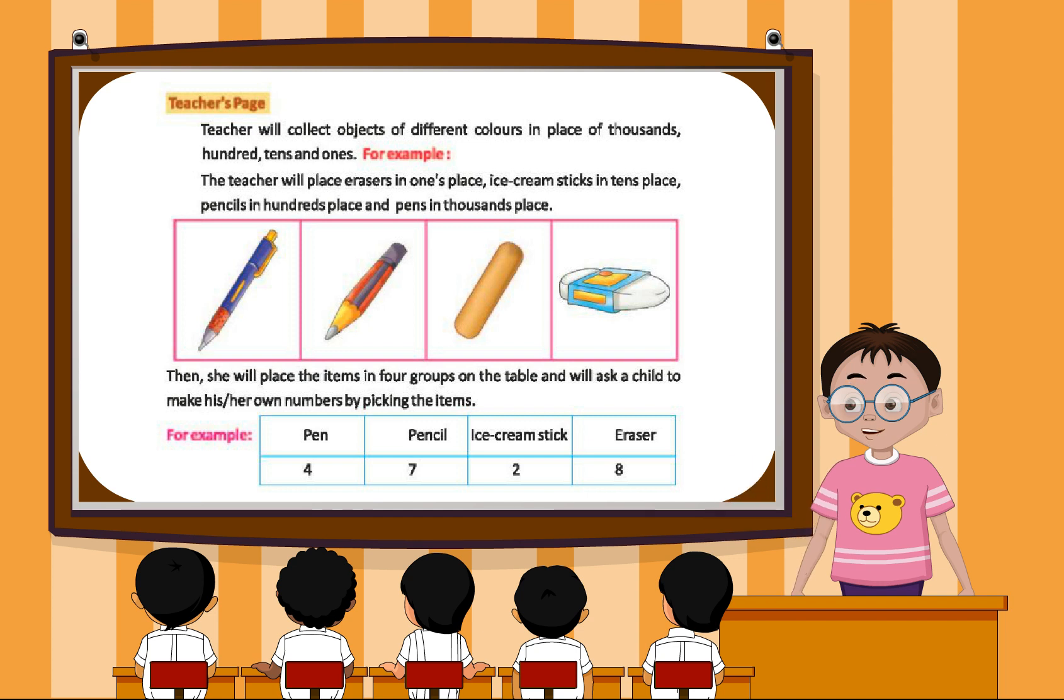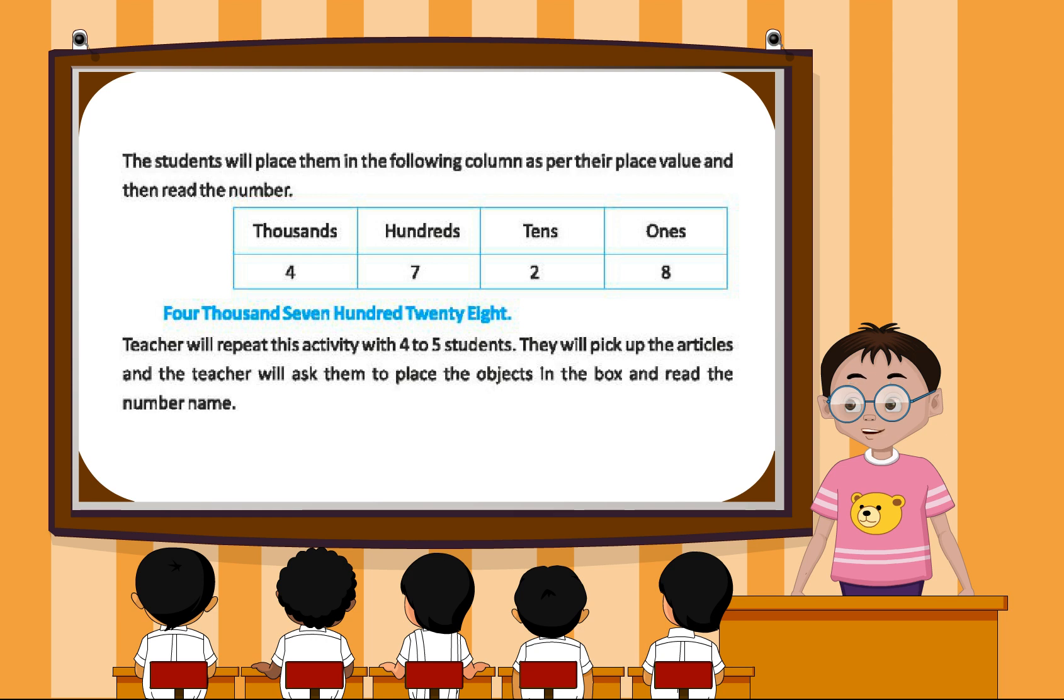Pen 4, Pencil 7, Ice cream stick 2, Eraser 8. The student will place them in the following columns as per their place value and then read the number.